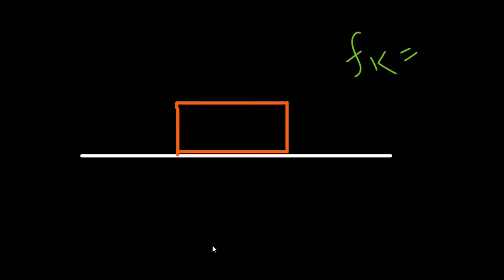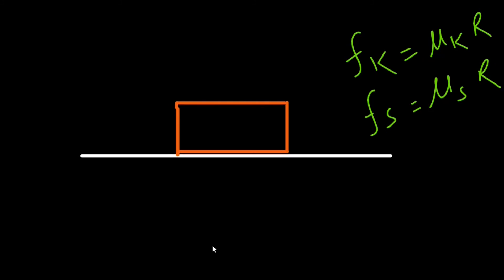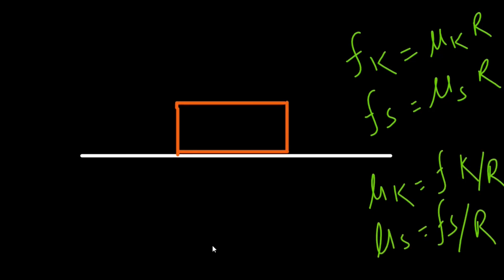Now let's discuss why kinetic friction is less than static friction. The kinetic friction is F_k = μ_k × N, and static friction maximum value is F_s = μ_s × N, where μ_k and μ_s are the coefficients of kinetic and static friction respectively. So μ_k = F_k / N and μ_s = F_s / N. When the surfaces of bodies have asperities and projections, those projections form molecular bonds with each other.